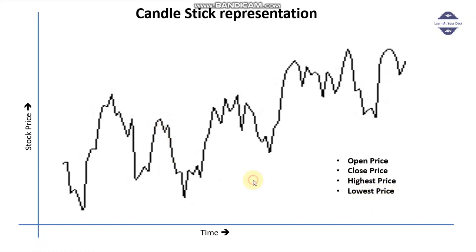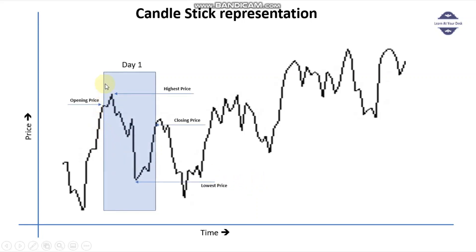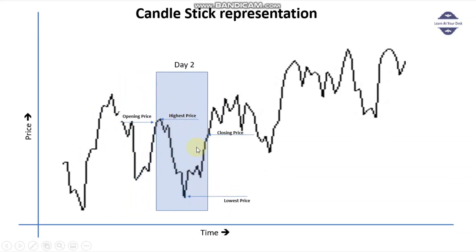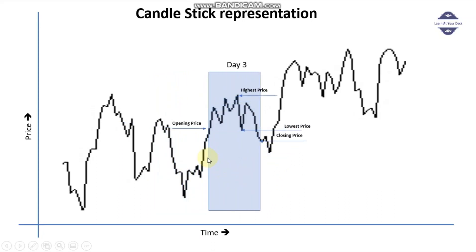Let's look at this in a little more detail. For day one, the opening price is here, then the price goes up, then comes down, and then goes up again, and this is the closing price when the stock closes for that day. So in this day you can see there is a highest price, a lowest price, and a closing price. Every day this happens — there is some opening price, highest price, closing price, and lowest price.